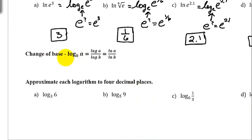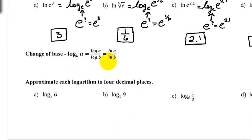The change of base formula is: log base b of a equals log(a) divided by log(b). You can use a common log or a natural log — the formula is the same: log(a)/log(b), or ln(a)/ln(b). It's always the log of what you're taking the log of divided by the log of the base, using either of the log buttons on your calculator.